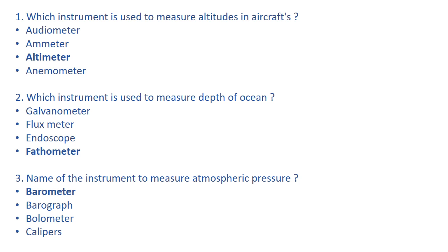The right answer is fathometer. The remaining options are galvanometer, flux meter, and endoscope. Galvanometer is used to measure electric current. Flux meter is used to measure magnetic flux. Endoscope is an instrument used to examine the internal parts of the body.